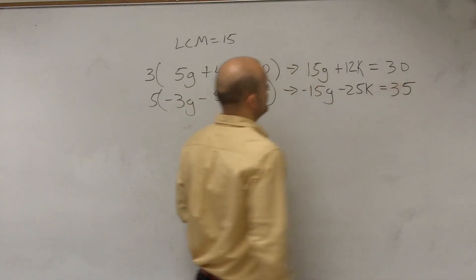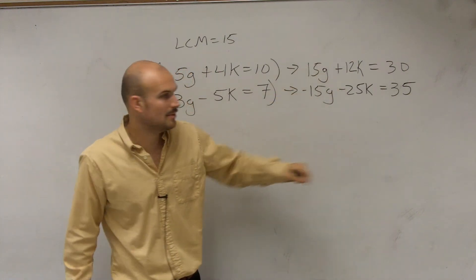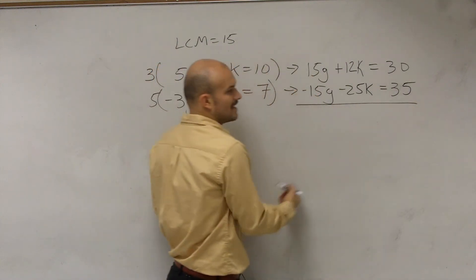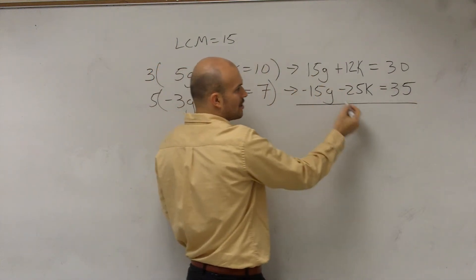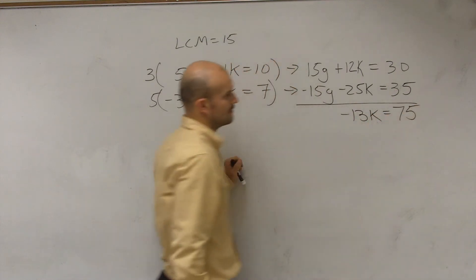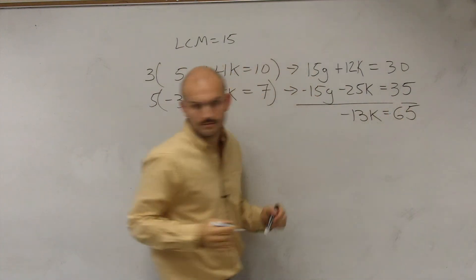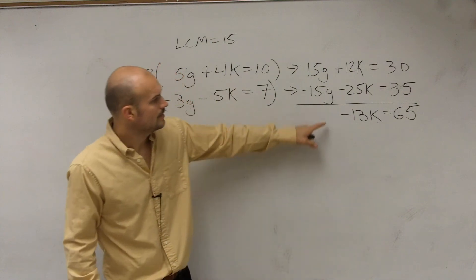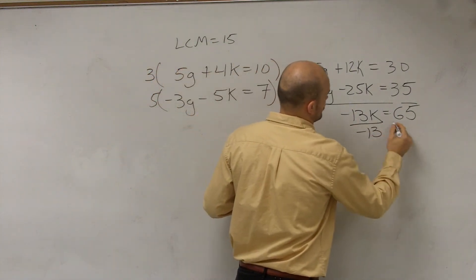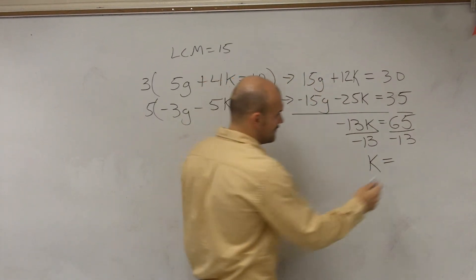Okay. So now, what we do for this problem is we simply go ahead and add them up. So since I now have a positive and a negative, I add them together. So therefore, this goes to zero. And now I have 13k equals 65. Thank you. Trevor, are you writing this one down? Okay. So then we divide by negative 13 and we get k equals negative 5.